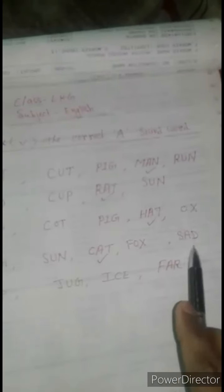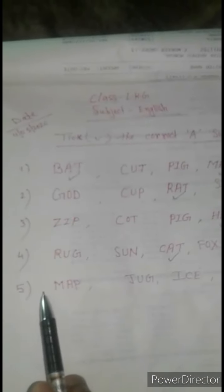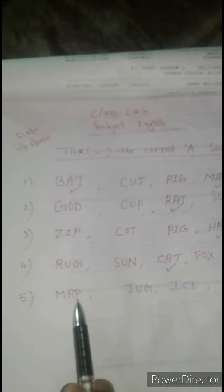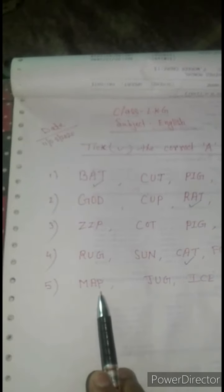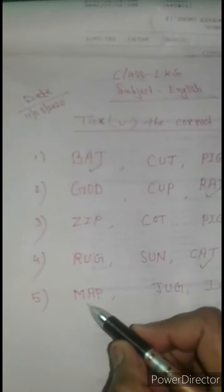F, O, X — Fox. A sound word? No, it is an O sound word. S, A, D — Sad. Is this an A sound word? Yes. Tick the A sound word. M, A, P — Map. Map is an A sound word? Yes. Tick the A sound word.